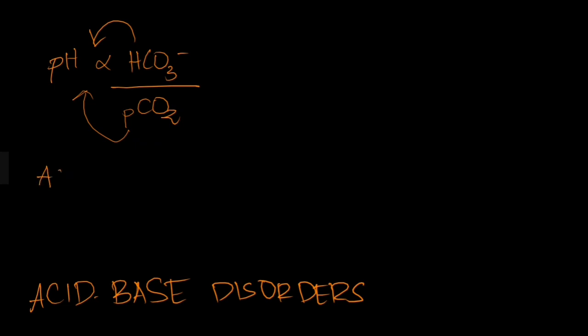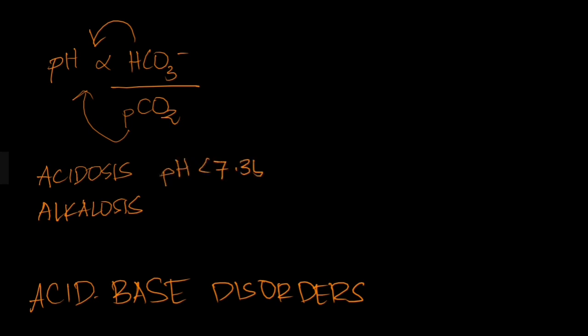Let us define some terms — acidosis and alkalosis. Acidosis is a blood pH less than the reference range, or a blood pH of less than 7.35. Alkalosis is a blood pH greater than the reference range, or a blood pH greater than 7.45. Sometimes some literature uses the terms acidemia and alkalemia for these two conditions.